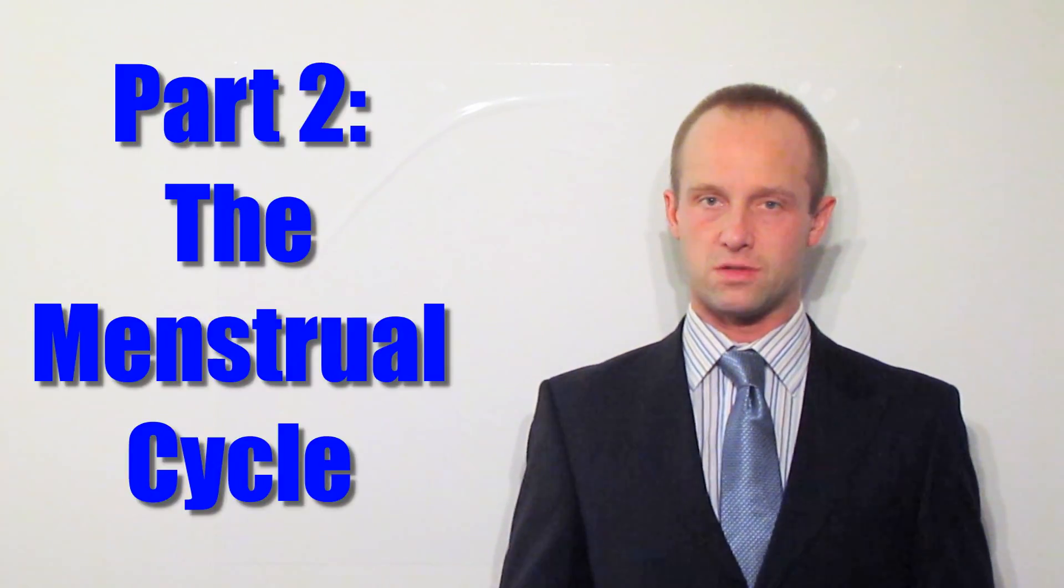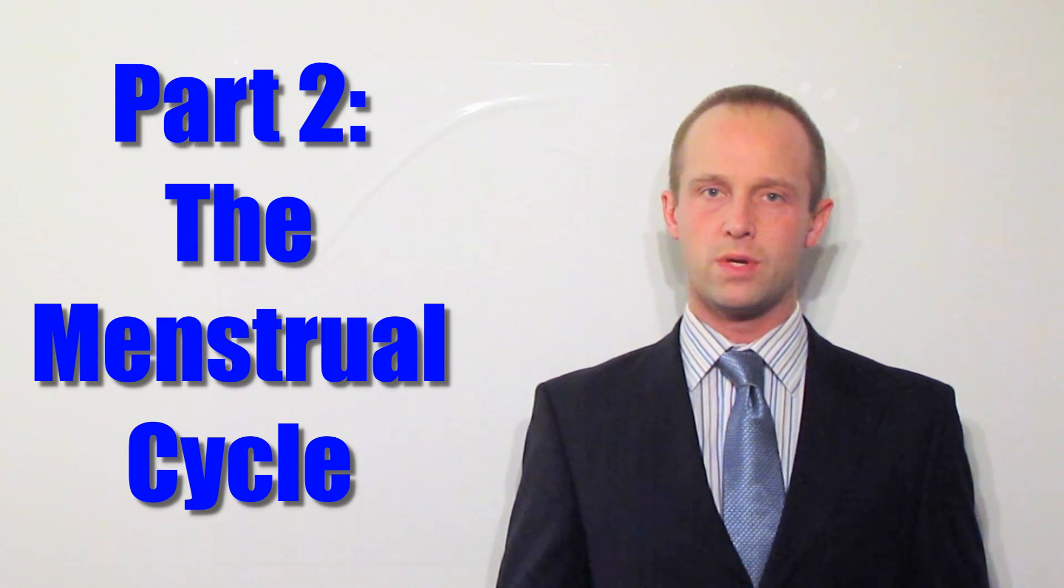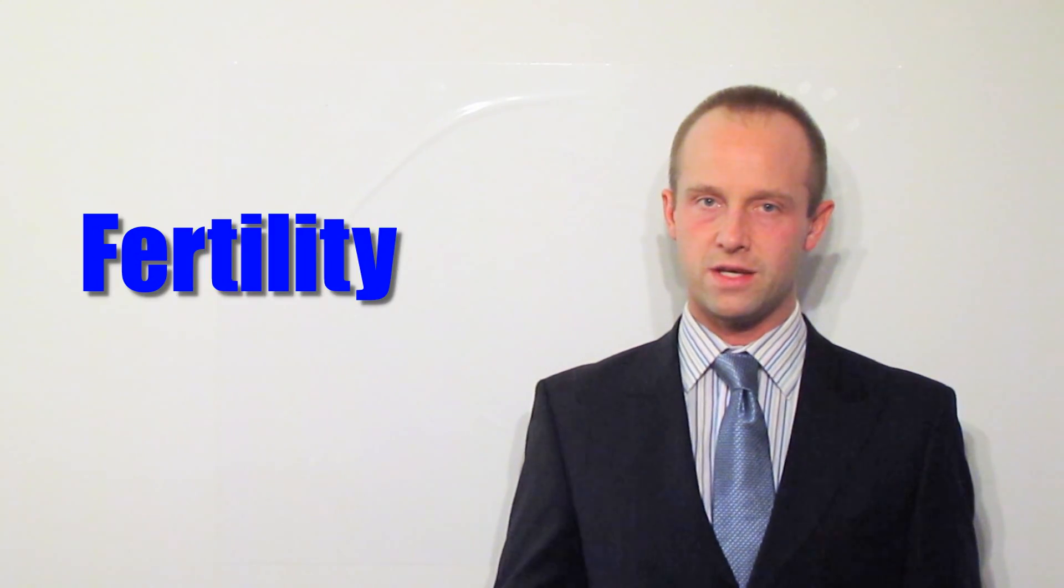In this video we're going to look at the second half of the lesson to do with the menstrual cycle. In particular we're going to focus on how hormone levels can be artificially manipulated to help fertility or to be used as a form of contraception. But just before we do that let's take a very brief look at how those hormone levels vary naturally throughout the course of the month.